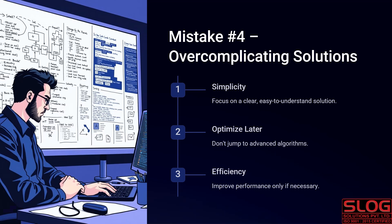The fourth common mistake is over-complicating solutions. First is simplicity: focus on a clear, easy-to-understand solution. When you have a question, prepare a simple roadmap that is crystal clear — something you can explain to a layman. Don't make it unnecessarily complex. Then is optimize later: in the beginning, use a simple algorithm rather than jumping straight to an advanced one, so the complexity stays low.